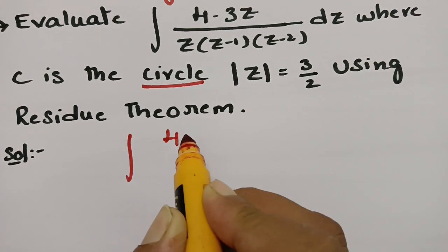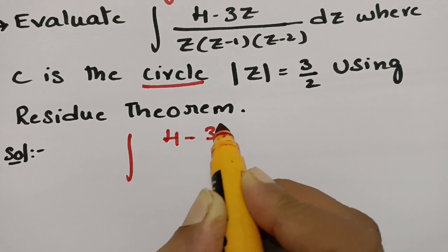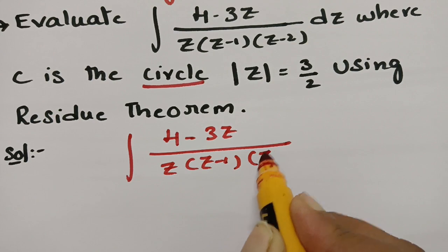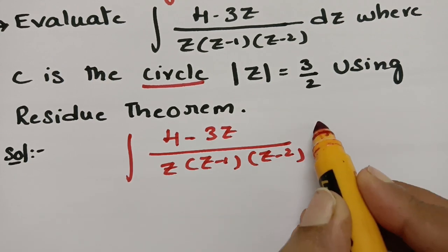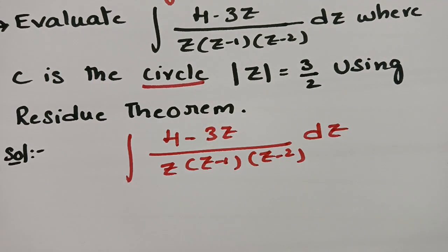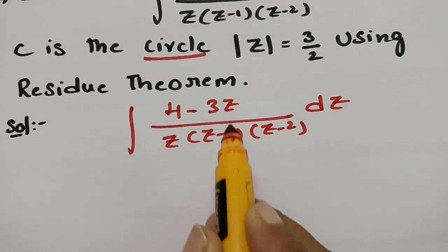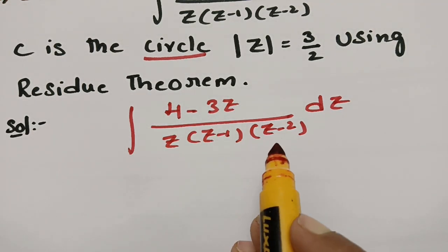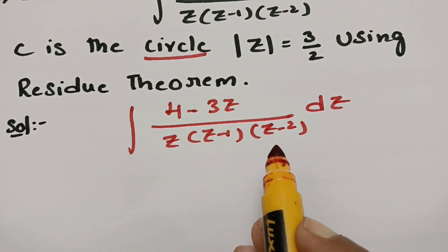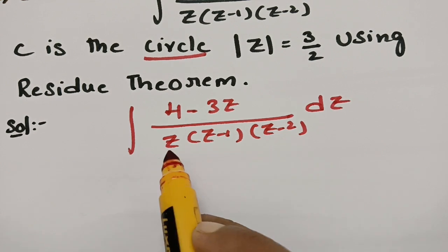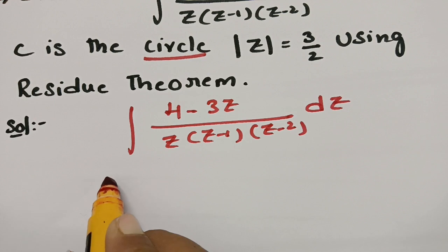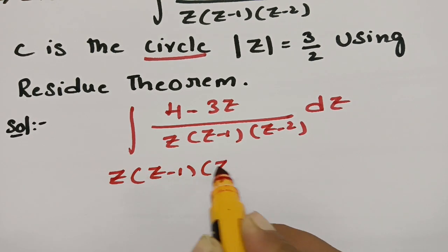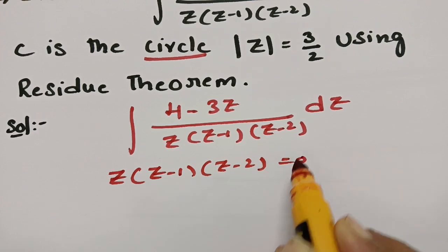The integral is given as the integral of (4 minus 3z) divided by z(z minus 1)(z minus 2) dz. The function value is f(z) = (4 minus 3z) / [z(z minus 1)(z minus 2)]. In order to find the poles, we equate the denominator to 0: z(z minus 1)(z minus 2) = 0.